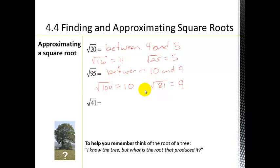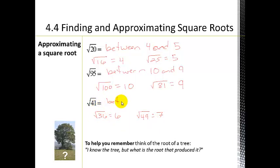Now the square root of 41. Looking at perfect squares: the square root of 36 is 6 and the square root of 49 is 7, so the square root of 41 is between 6 and 7. Since 41 is 5 away from 36 and 8 away from 49, it's going to be a little closer to the 6 side than the 7 side. That's how we approximate square roots.